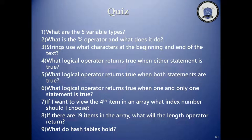Question number one: what are the five variable types? The answer is BNASH — Boolean, numbers, arrays, strings, and hash tables.